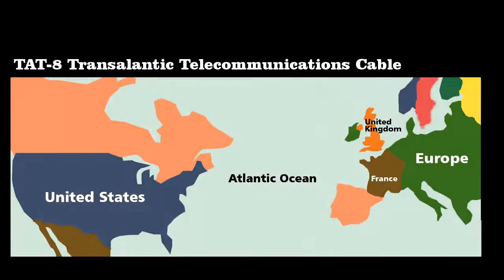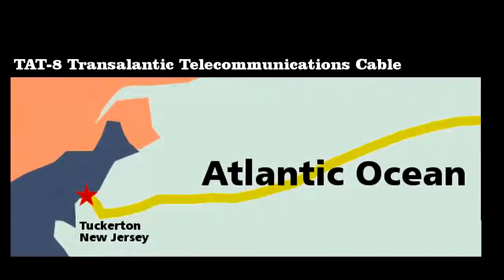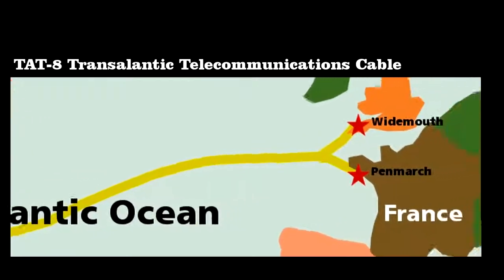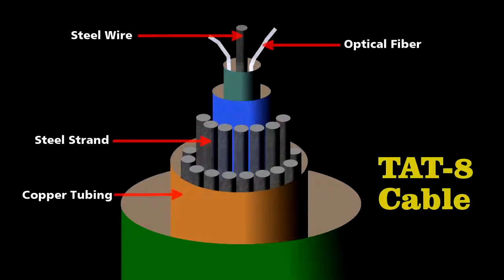One of the greatest engineering achievements was the first ocean-spanning fiber optic cable. Called TAT-8, it extended from Tuckerton, New Jersey, following the ocean floor over 3,500 miles until branching out to Whitmouth, England, and Pondmache, France.